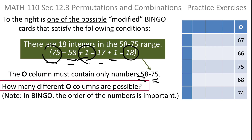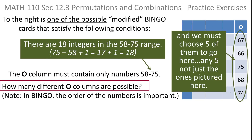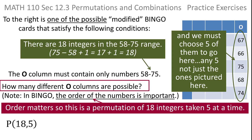So you're choosing from 18 numbers and placing them one at a time in their slots. But you can't reuse a number — that's the key — and order is important. If you can't reuse a number and order is important, that means permutation. So it's a permutation of those 18 integers taken five at a time. n is 18, r is 5.